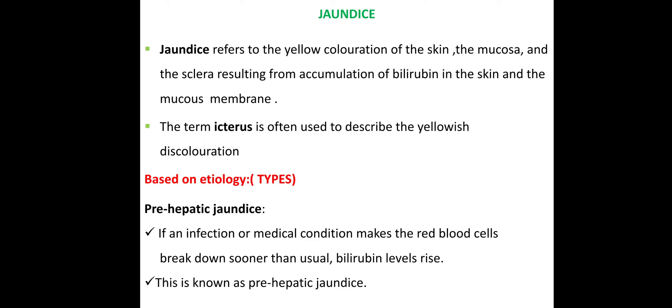The term icterus is often used to describe the yellowish discoloration. When our eyes and our skin show a yellow color — that yellowish appearance — we call it icterus.